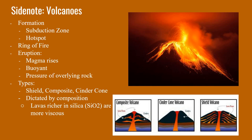Volcanoes are formed in a couple different environments. The most common is plate boundaries, especially areas like subduction zones, as well as many divergent plate boundaries like the mid-ocean ridges and the East African Rift Valley.